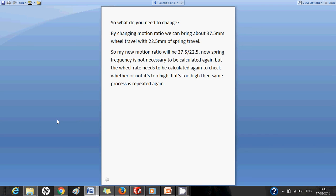So my new motion ratio becomes 37.5 divided by 22.5mm. Now my motion ratio is changed, but my spring stiffness doesn't change. The spring frequency need not to be calculated again, but the wheel rate needs to be calculated again and so is the wheel frequency. If the wheel frequency exceeds, if it comes out to be too large, then the whole process needs to be iterated once again.